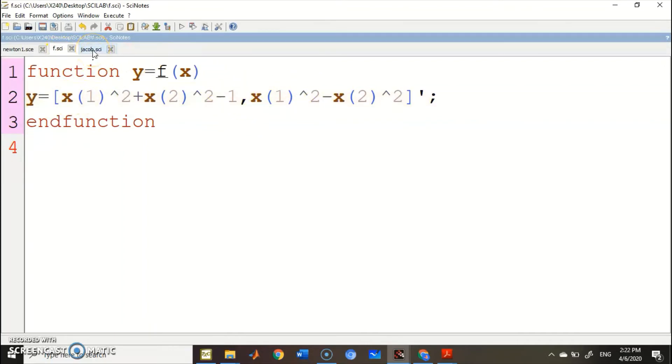You also need Jacob.SCI. You can use a space or comma to separate the two columns, and then semicolon here for the next row. This is the Jacobian X.